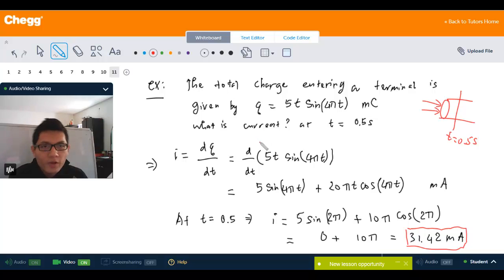From the previous video, we know that the current is the rate of change of the charge with respect to time. So taking the derivative of the charge q, we will get the current i. So we have the expression for q here. You can take the derivative of this, which is this expression using the product rule.